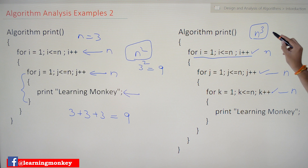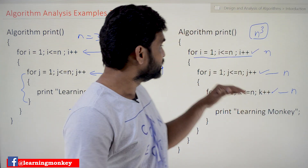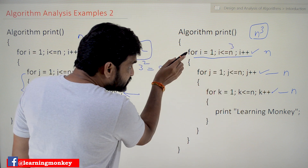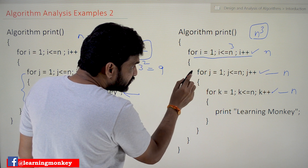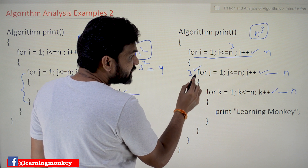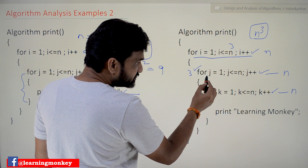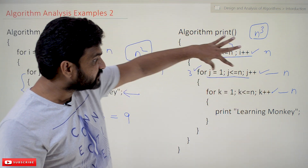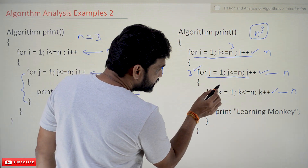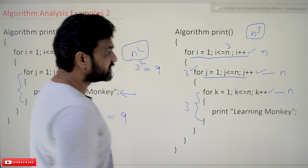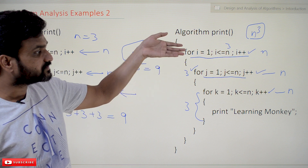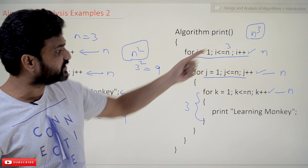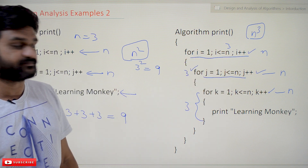To confirm: if n = 3, the outermost loop iterates 3 times. Every time we enter it, the second loop iterates 3 times. And every time we enter that, the innermost loop iterates 3 times. So the print statement gets printed n³ = 3 × 3 × 3 = 27 times.